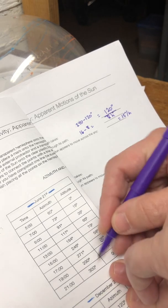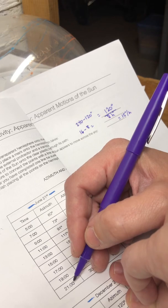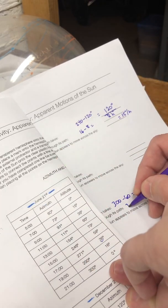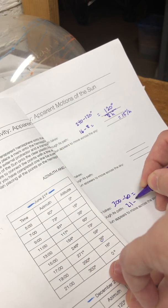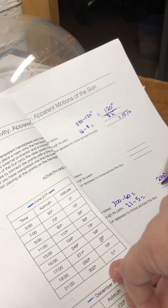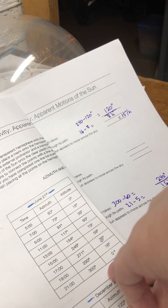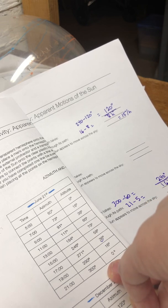The time, it would be 2100 minus 5. So 21 minus 5 a.m. gives me 16 hours. When I divide these two, surprise, surprise, I get 15 degrees per hour.